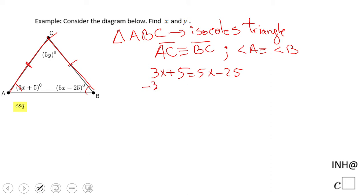From this equation, subtract 3x on both sides, then add 25 on each side, and divide by 2. We get x = 15.